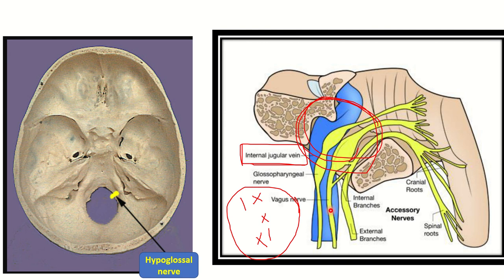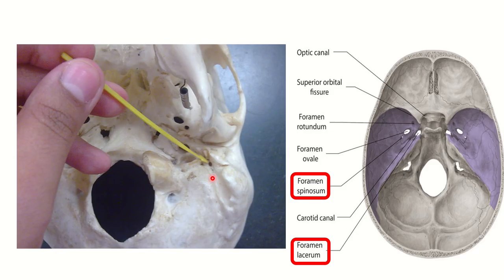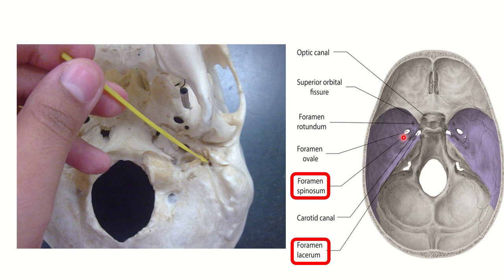So the jugular foramen contains four structures: cranial nerves glossopharyngeal, vagus, and accessory, plus the internal jugular vein — remember these by any means. Also visible in the picture is the stylomastoid foramen, present in the outer part of the temporal bone just in front of the mastoid process. The middle cranial fossa is mainly formed by the temporal bone and parts of the sphenoid bone, and contains three important foramina: foramen rotundum, foramen ovale, and foramen spinosum.